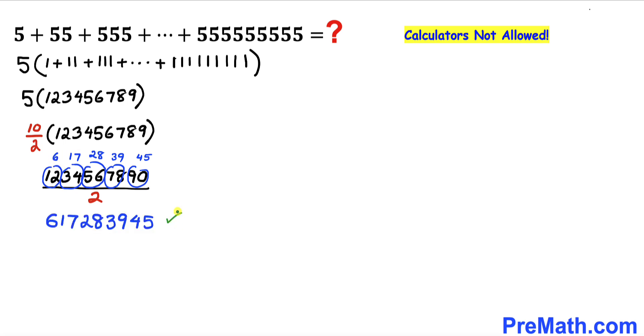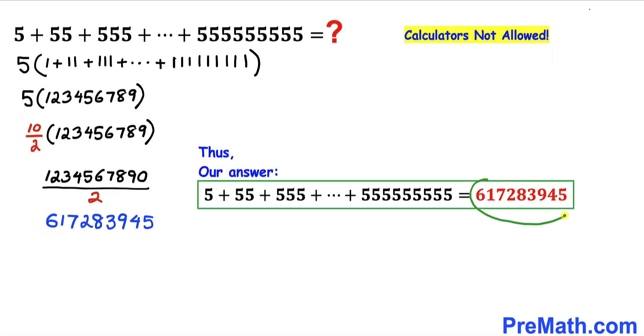As you can see in this next step I just copy down this 45 over here. 39 is right up here. 28 is here. 17 is right up here and this 6 is over here. And here's our final answer once we have added all these numbers in this series.